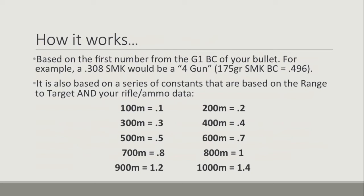The BC wind formula is based on the first number from the G1 BC of your bullet. G1 references the drag curve of your bullet, so it's a G1 profile. For example, a .308 SMK 175-grain has a BC of 0.496 if it's traveling below 2800 feet per second. The 168-grain is even lower, still in the 0.4s. So for a .308 firing an SMK projectile, it becomes a 'four gun' — you use that first number of the G1 BC, which is obviously four. You ignore the decimal, and that becomes the gun value.